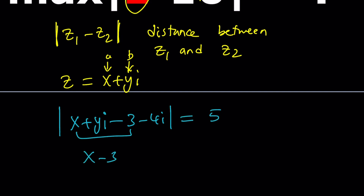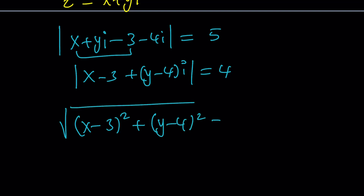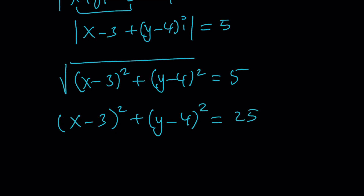Put the real parts together as X minus 3 and the imaginary parts as Y minus 4. The absolute value of this number is the square root of (X minus 3)² plus (Y minus 4)², and that equals 5. If you square both sides you get our circle equation — a circle with center at 3 comma 4 and radius 5.